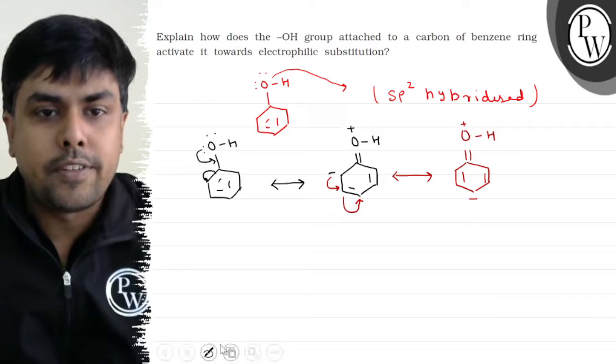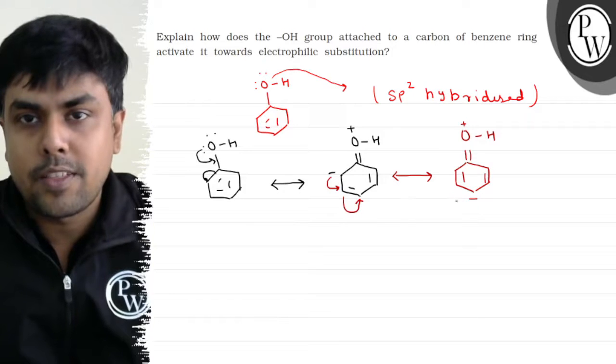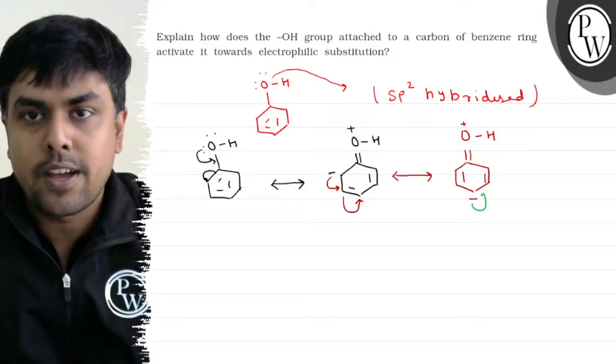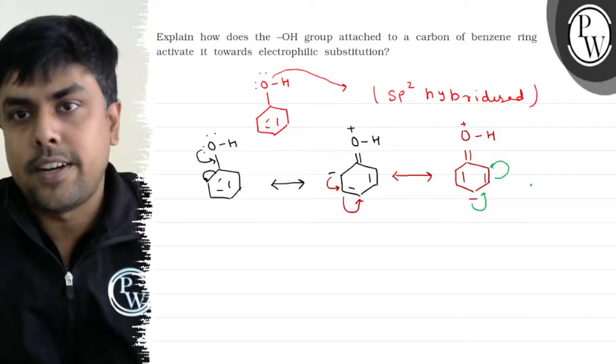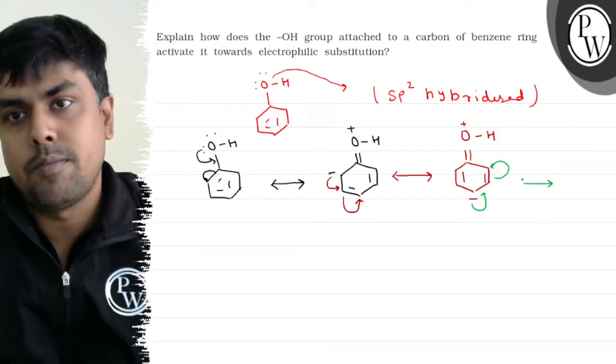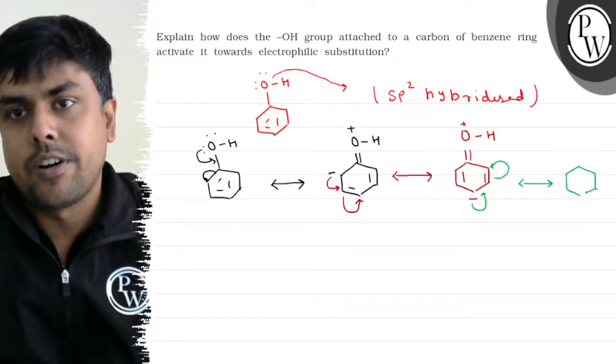Now will there be delocalization again? Absolutely. And how? So this negative charge will delocalize and this double bond will shift on the adjacent atom. And the structure I'll get will be something like this.